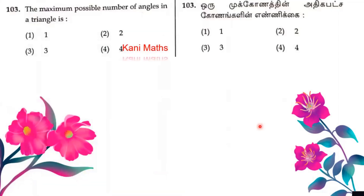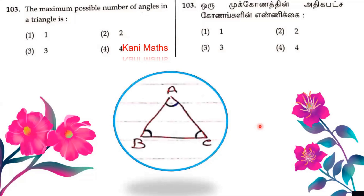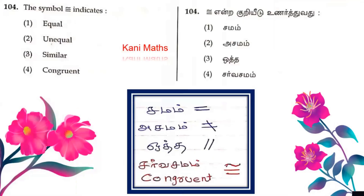Question number 103. The maximum possible number of obtuse angles in a triangle. The option is 1. Question number 104.